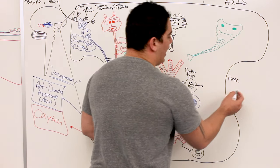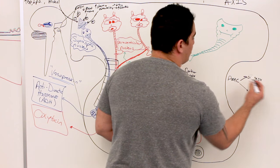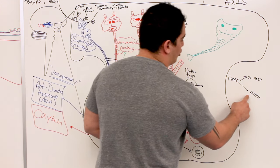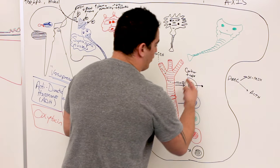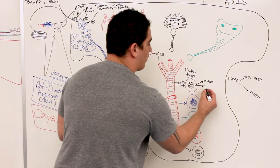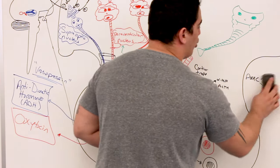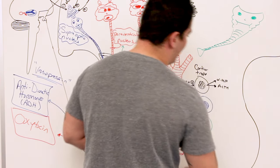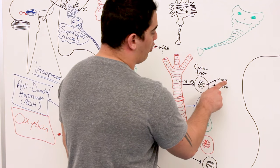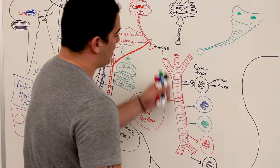That protein is called proopiomelanocortin, or POMC. POMC gets broken down into a bunch of different fragments, but the two we focus on are alpha MSH (alpha melanocyte stimulating hormone) and ACTH (adrenocorticotropic hormone). So CRH from the paraventricular nucleus stimulates the corticotrope to release alpha MSH and ACTH.